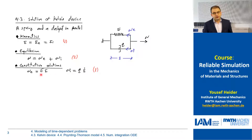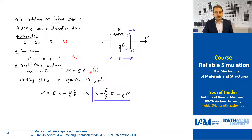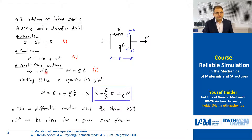Then we have the constitutive relations, which are Hooke's elasticity law for the spring branch. And then we have the stress and strain rate relationship, which is connected with the viscous element. If we insert the two constitutive relations, marked as equation number three, into equation number two, we end up with an equation that includes only the total strain and the total stress. This is a differential equation connected to the Kelvin model — it's a differential equation in time with respect to the strain or strain rate.